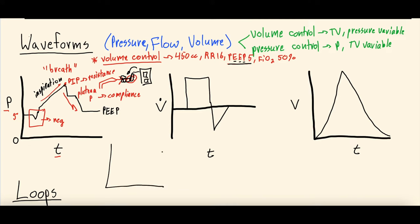The peak flow is related to your inspiratory time, also known as I-time. Because what you've set on the ventilator is a volume — say 400 cc's each breath — how much flow is needed depends on how fast you set that breath to go in. If the breath goes in over one second, it flows that volume differently than if set over two seconds, since it has twice the time to push in those 400 cc's. So the peak flow is related to the inspiratory time, which is something you set on the ventilator.